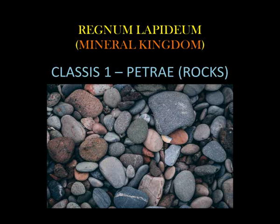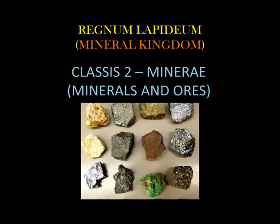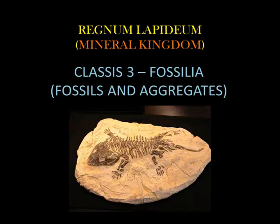Regnum Lapideum, the mineral kingdom, had three classes: Class 1, Petrae (rocks); Class 2, Minerae (minerals and ores); Class 3, Fossilia (fossils and aggregates). Of course, the mineral kingdom is not formed by living things. But remember, the human mind has a necessity to put all things in some box with a definition. According to Linnaeus, life was divided into two kingdoms: Animalia and Vegetabilia.